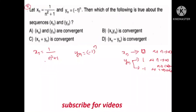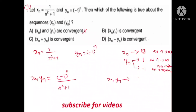This is not convergent. We will not say xn is convergent. We will not say yn is convergent. We will say xn into yn equals (−1)^n divided by n² plus 1. Now, xn and yn tends to 0. The denominator is infinity. As n tends to infinity, xn·yn tends to 0. It is convergent.